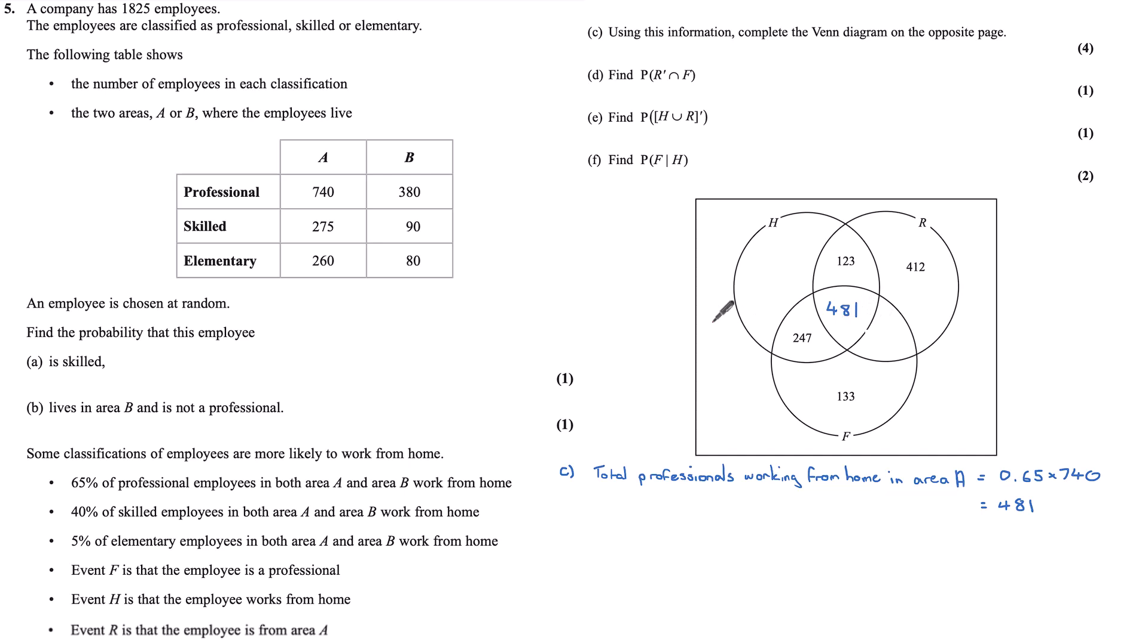Now, let's look at this intersection here, the intersection of R and F. So this is every professional that works from area A. Now we know that that's 740. So these two numbers should add up to 740. So this value will be 740 subtract 481, which is 259.